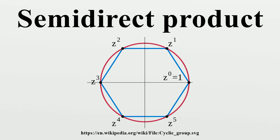G equals NH and N intersect H equals e. Every element of G can be written in a unique way as a product nh, with n in N and h in H.